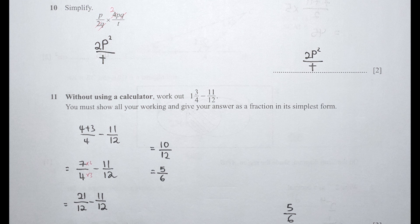Question 11 is pretty straightforward — change the mixed number 1 and 3 over 4 into 7 over 4, then subtract 11 over 12. Change the base to 12, so multiply 7 over 4's numerator and denominator by 3 to get 21 over 12. Then 21 minus 11 gives 10 over 12, which simplifies to 5 over 6.